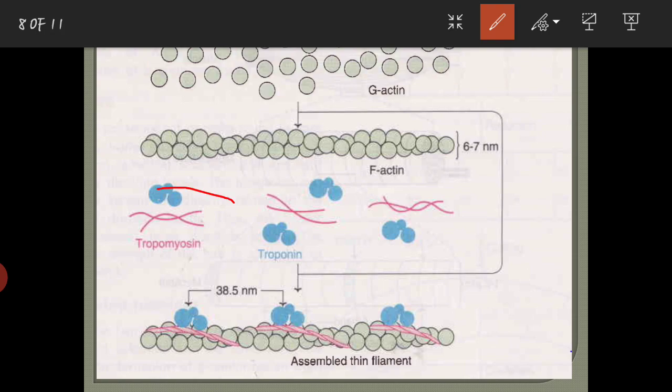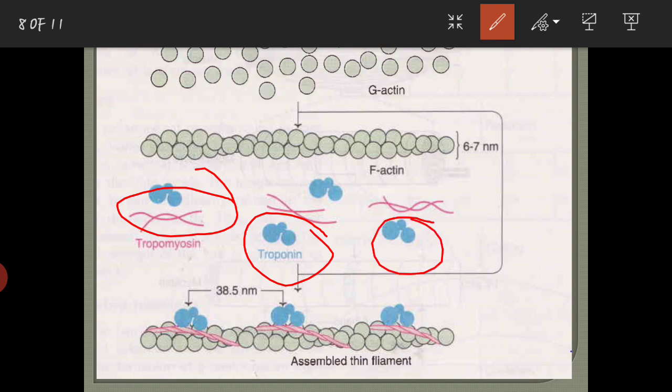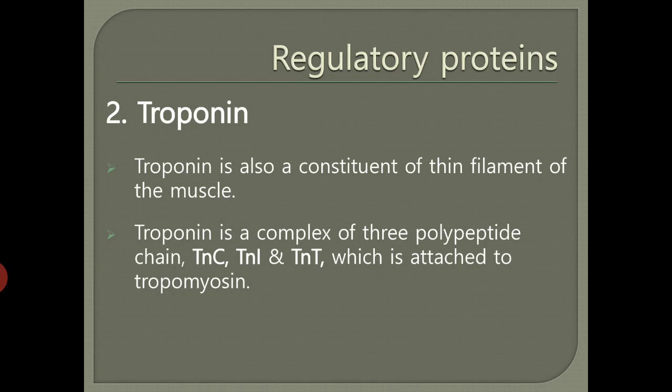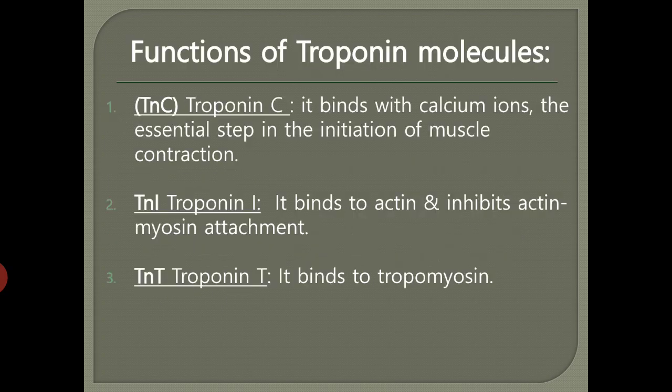Here you can see tropomyosin, which has two polypeptide chains, and troponin, which has three subunits. Troponin is also a constituent of the thin filament of the muscle fiber. It is a complex of three polypeptide chains: troponin C (TnC), troponin I (TnI), and troponin T (TnT), where troponin T is attached to the tropomyosin.